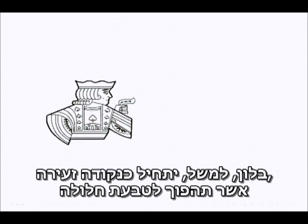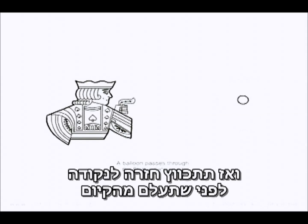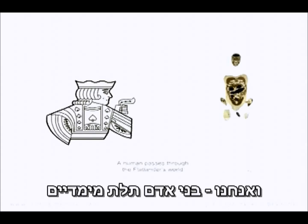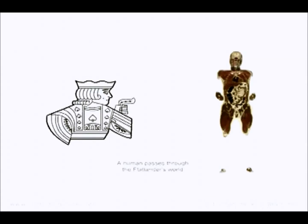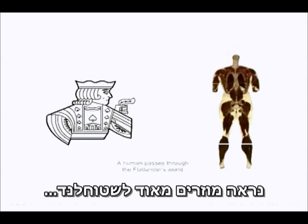A balloon, for instance, would start as a tiny dot, become a hollow circle which inexplicably grows to a certain size, then shrinks back to a dot before popping out of existence. And we three dimensional human beings would seem very strange indeed to a flatlander.